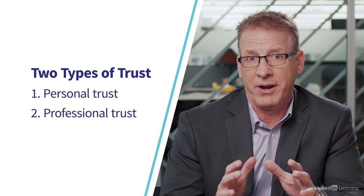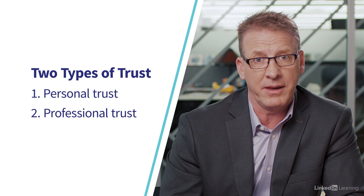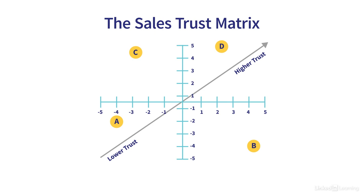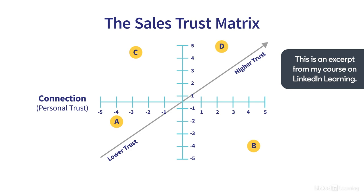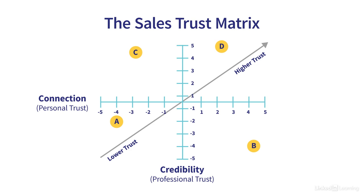Professional trust is about your ability to create respect by demonstrating you and your company's credibility. This credibility is made up of knowledge, skills, and capability. Let's take a look at what we call the sales trust matrix. The sales trust matrix takes into account a combination of both personal and professional trust. Connection makes up the x-axis and credibility makes up the y-axis.